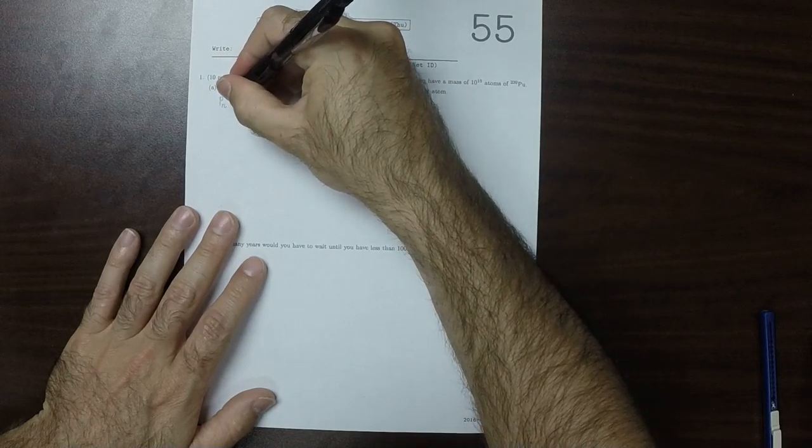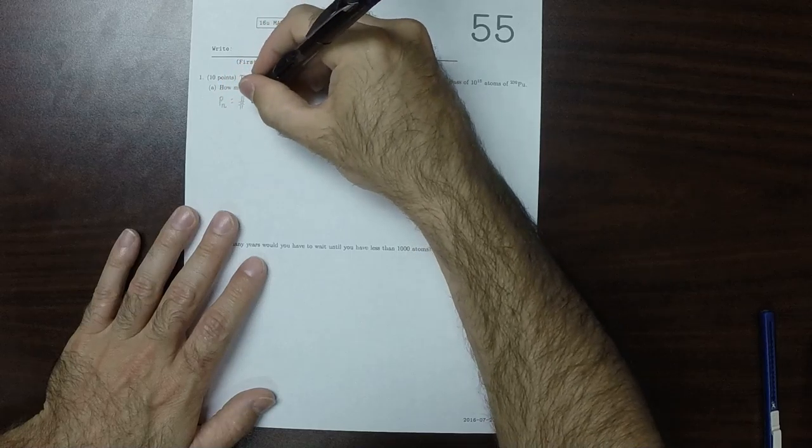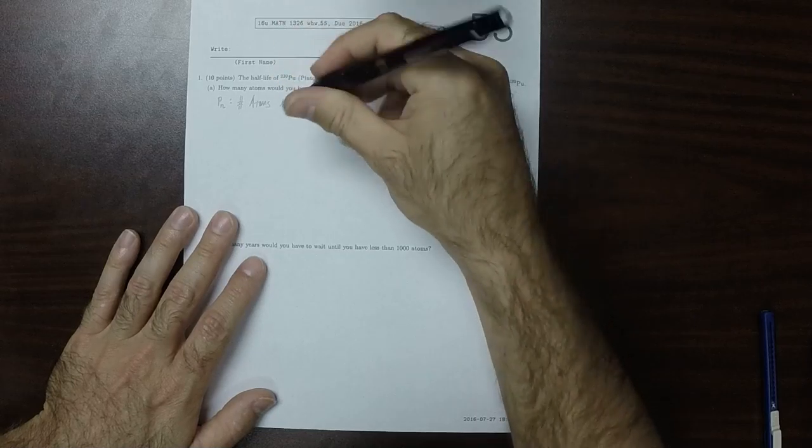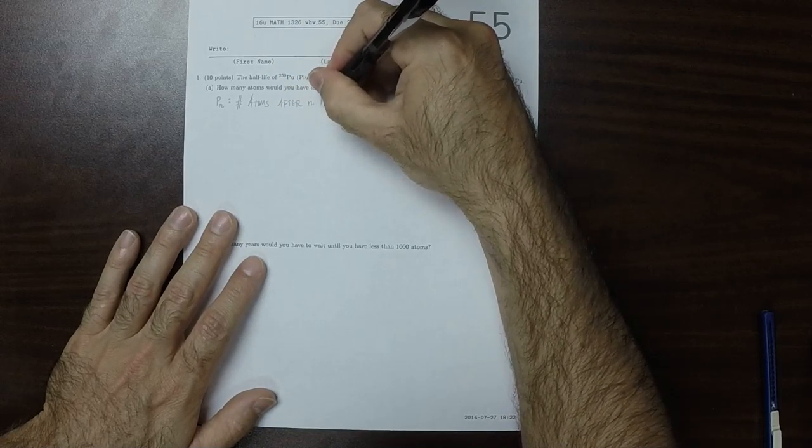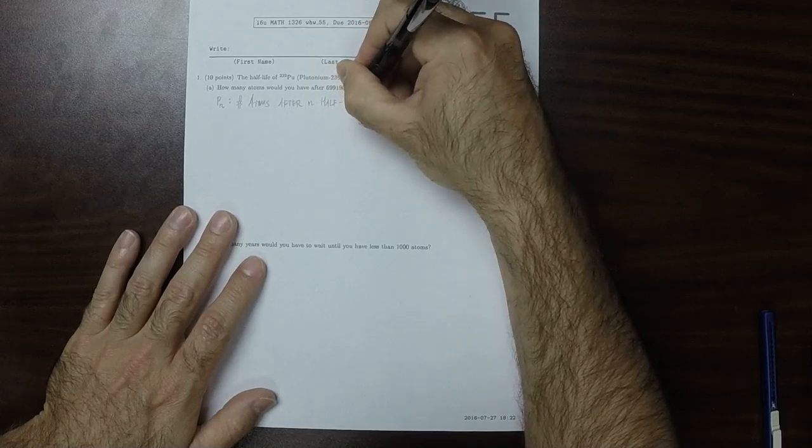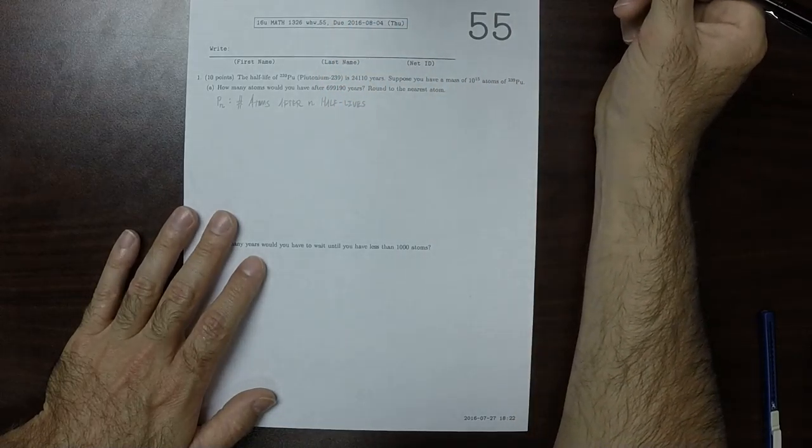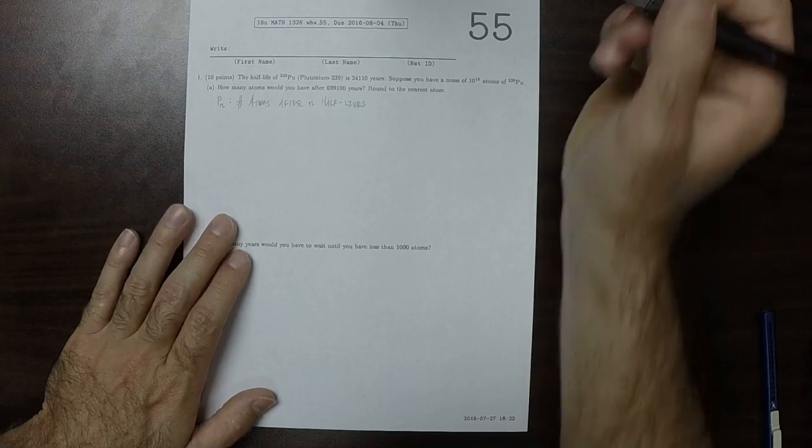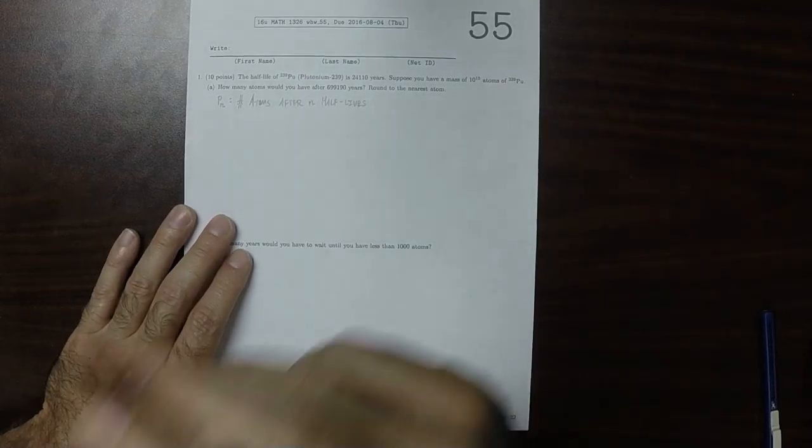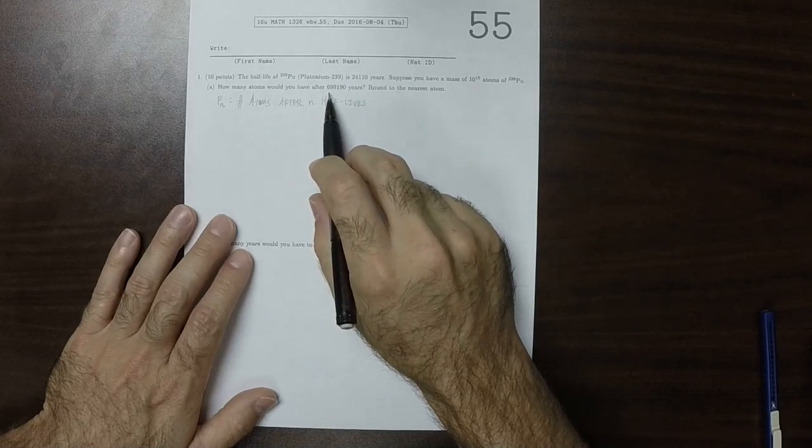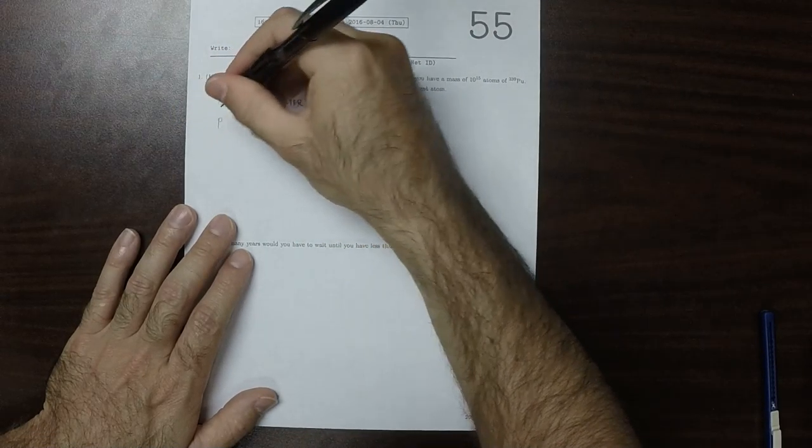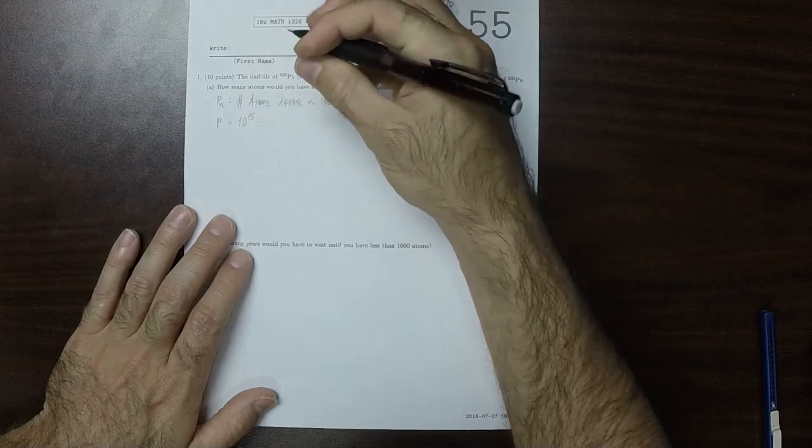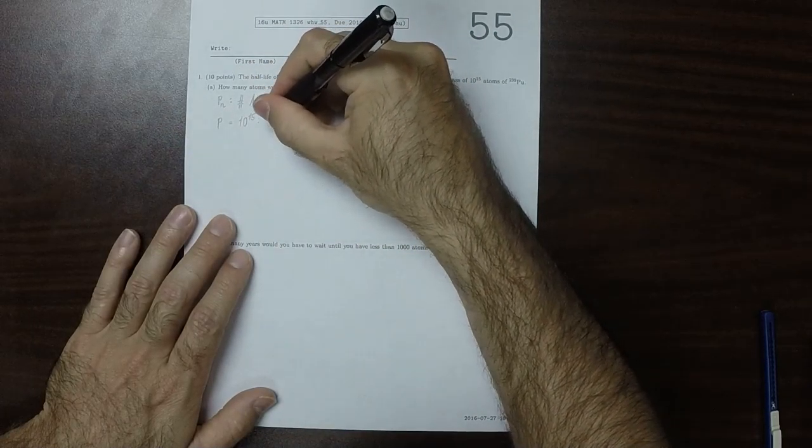Okay, so what we want to do is set up a model where PN, this is the number of atoms after N half-lives. We're going to use the fact that the initial amount was 10^15.